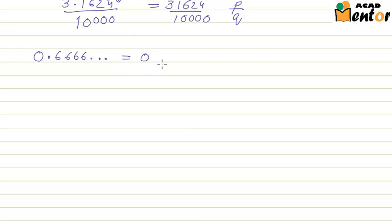This can also be represented as 0.6 bar. The bar on 6 means that 6 goes on repeating. Now we are supposed to represent this in the form of P by Q. Let us assume x is equal to 0.6 bar or 0.6666.